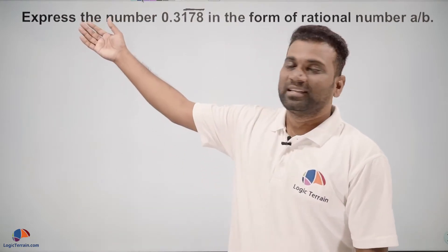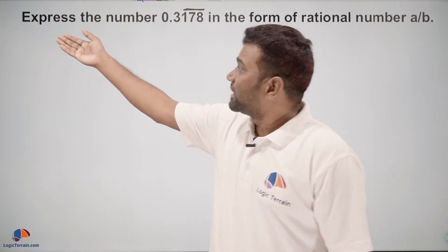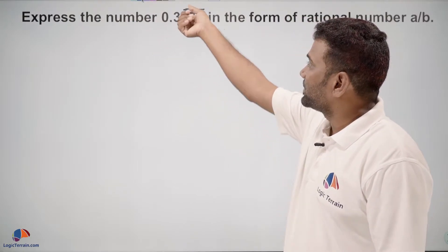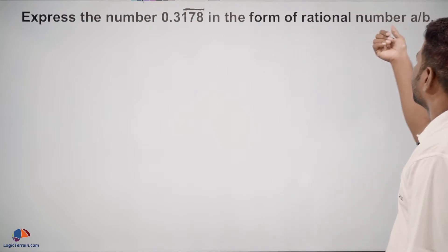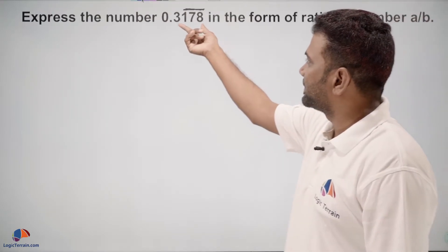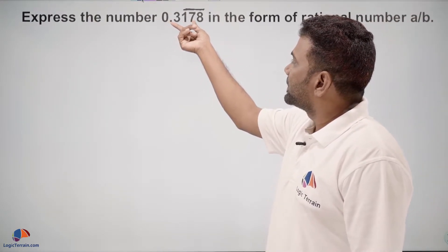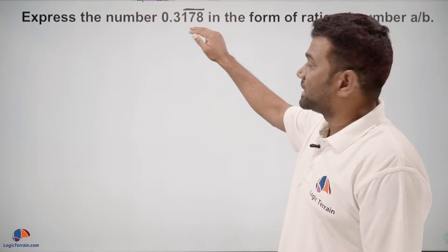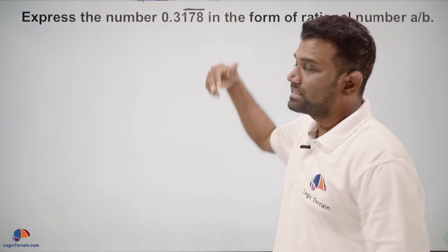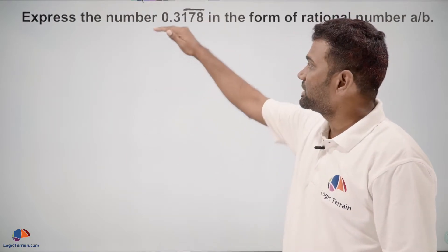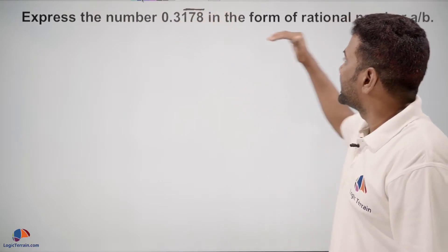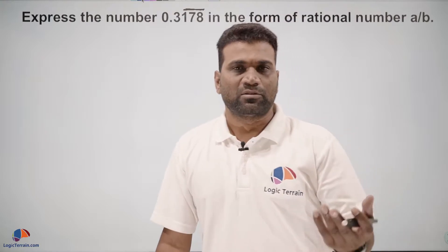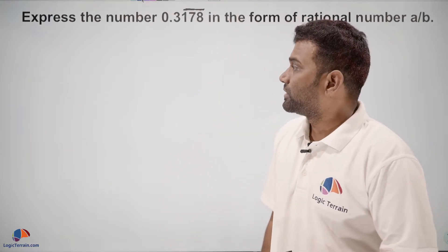Hello dear students. Here is our question: express the number 0.3178 bar in the form of rational number a upon b. So we have given a non-terminating and repeating decimal. This is non-terminating and repeating decimal, and we need to convert it into rational number form, that is a upon b — in other words, p upon q — numerator upon denominator.